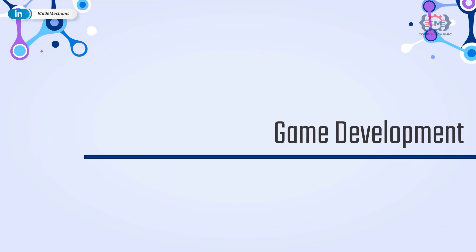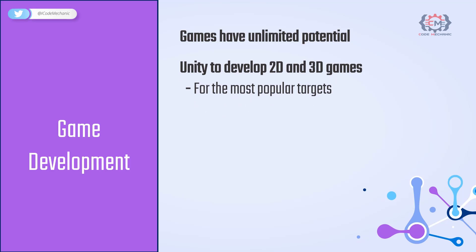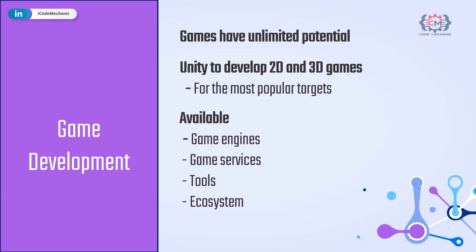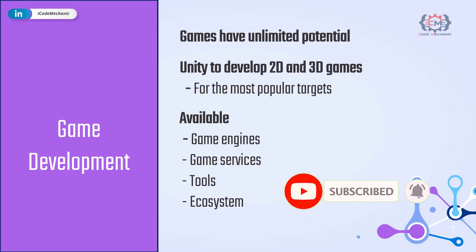Another type of application you can create is games. Games have the possibility of exploding in popularity — the sky is the limit. With .NET you can use Unity to develop 2D and 3D games for the most popular desktops, phones and consoles. You can build games for PC, Mac, consoles, mobile and VR/AR using cross-platform engines. Cloud game services like Azure PlayFab are available, or you can build your own on any cloud. You can code, debug, store and test on any platform with world-class developer tools, and integrate with modern backend services, native APIs and components.